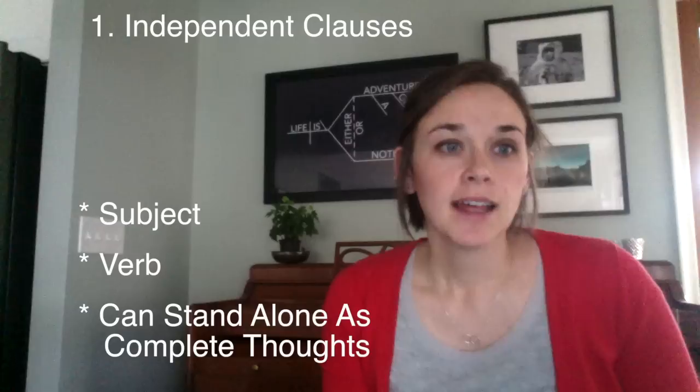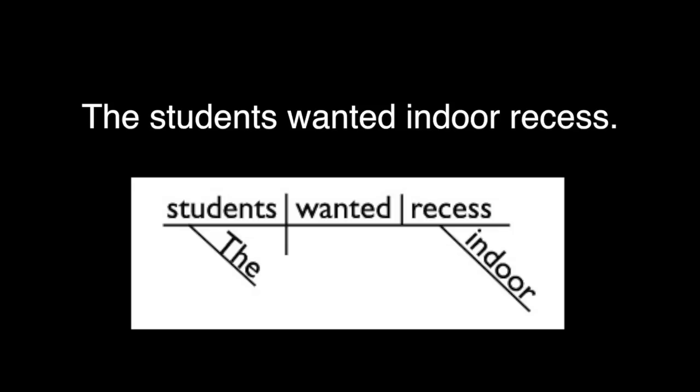Let's start with subject number one, which is independent clauses. An independent clause is a group of words that has a subject and a verb, and it can stand alone as a complete thought or a complete idea. Here's an example: 'The students wanted indoor recess.' I'm putting up a sentence diagram of that sentence. The students wanted indoor recess — we have a subject, 'students,' that tells us whom or what the sentence is about, and a verb, 'wanted,' which tells us what the subject is or is doing. That group of words can stand alone as a complete thought.